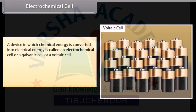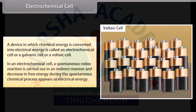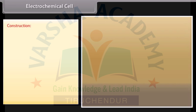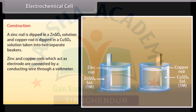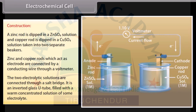Electrochemical cell: A device in which chemical energy is converted into electrical energy is called an electrochemical cell, or a galvanic cell, or a voltaic cell. In an electrochemical cell, a spontaneous redox reaction is carried out in an indirect manner. Construction: A zinc rod is dipped in a ZnSO₄ solution and a copper rod is dipped in a CuSO₄ solution, taken into two separate beakers. The zinc and copper rods, which act as electrodes, are connected by a conducting wire through a voltmeter. The two electrolyte solutions are connected through a salt bridge — an inverted glass U-tube filled with a warm concentrated solution of some electrolyte.